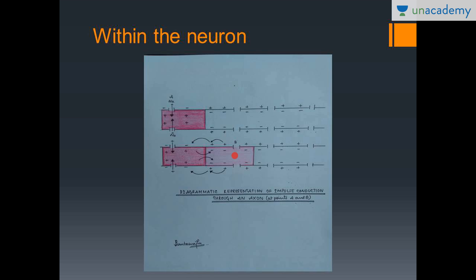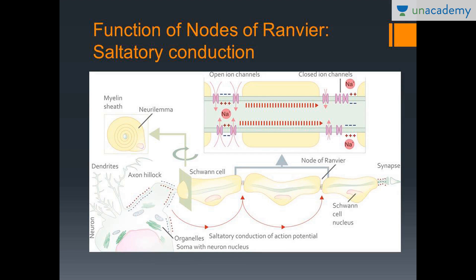You might ask: when a segment is depolarized, why doesn't the impulse move backwards? The answer lies in the refractory period — the previously depolarized membrane segment is in a refractory state, so any stimulus generated by the next segment cannot act on it. The impulse therefore keeps jumping forward from segment to segment and never propagates backwards.